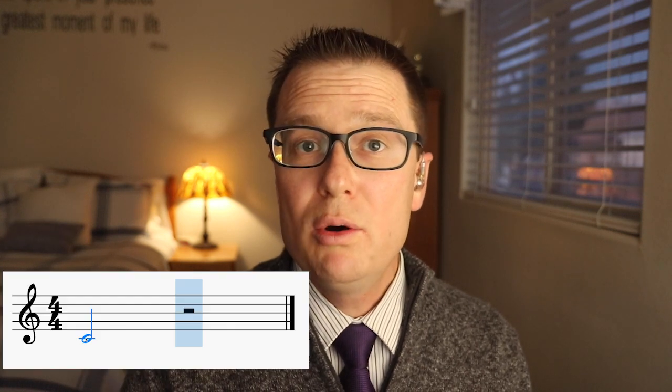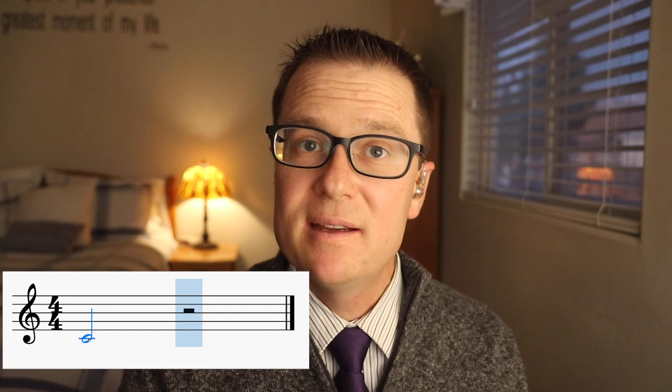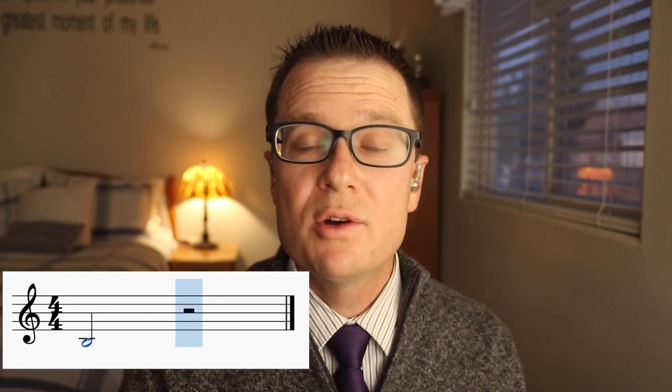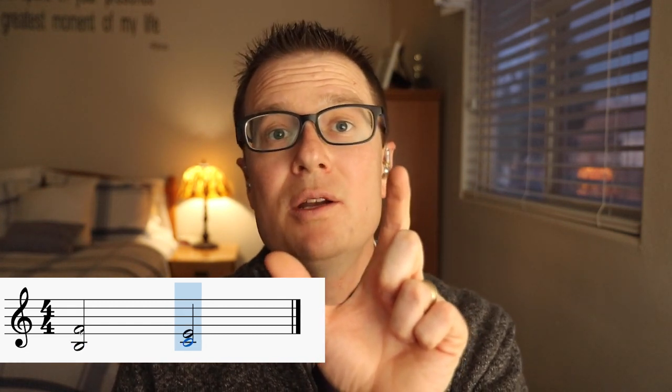So here is Do. Below Do is Ti. Ti wants to go to Do because of the half-step relationship. If you look on a piano, B to C has no black note in between it. Now if you go up to Fa, once again there's a half-step that goes down to Mi below. So listen to this interval together, the outer intervals: Ti, Fa wants to resolve to Do, Mi.